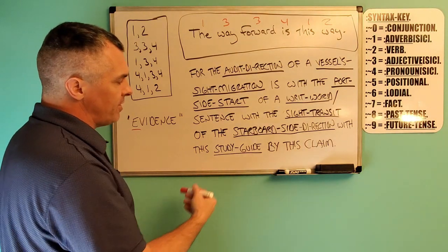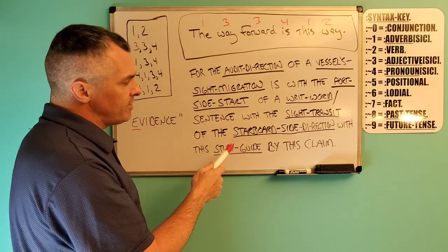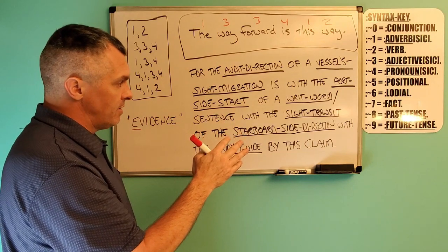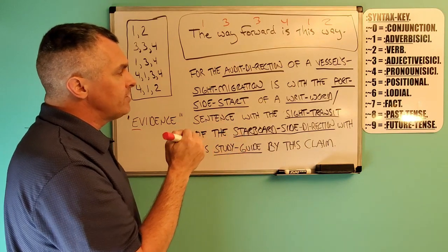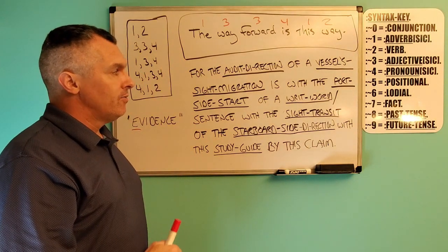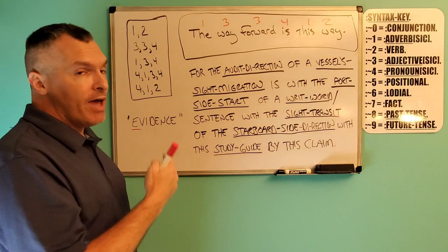Backwards for this claim of the study guide is with the starboard side direction of the site transit with a writ word sentence of the port side start with the vessel's site migration for the audit direction.